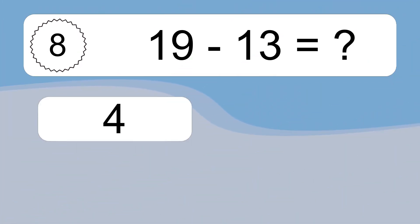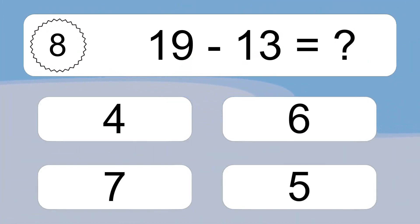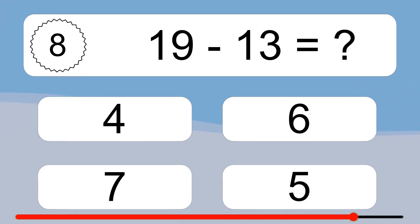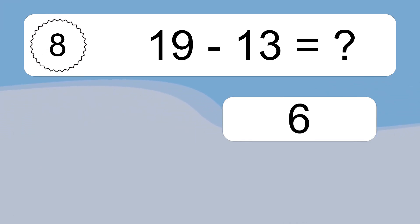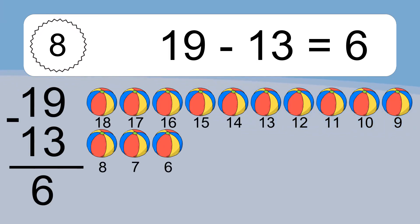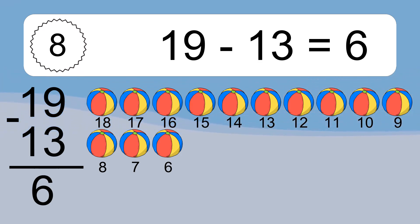19 minus 13 equals what? 19 minus 13 equals 6. Let's count it: 18, 17, 16, 15, 14, 13, 12, 11, 10, 9, 8, 7, 6.